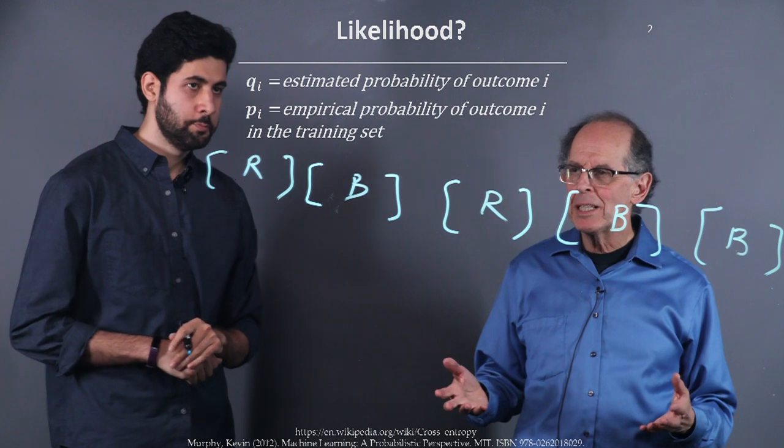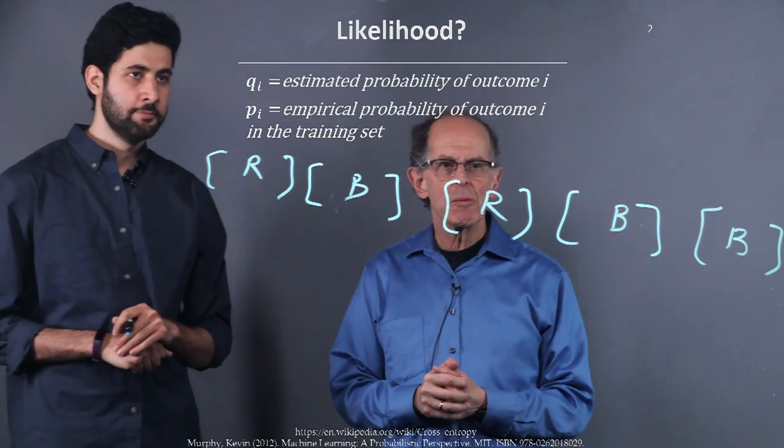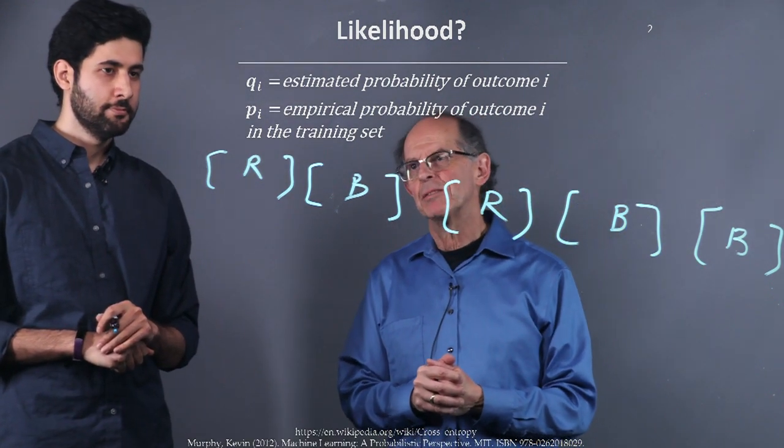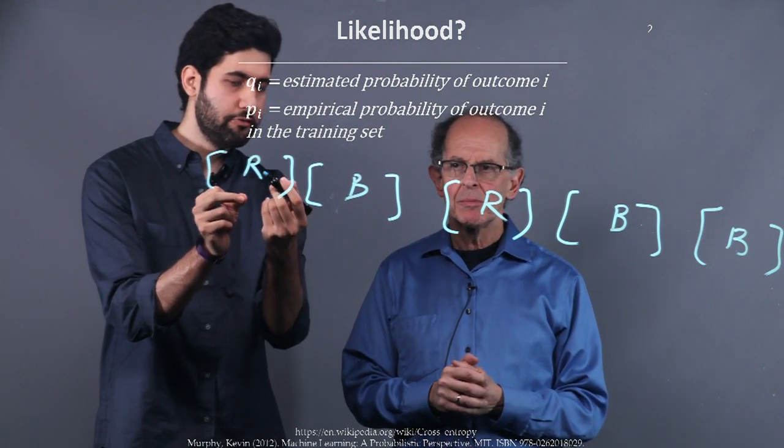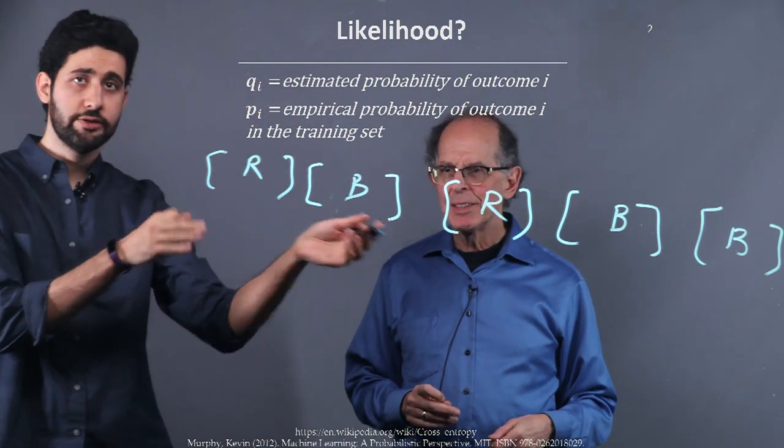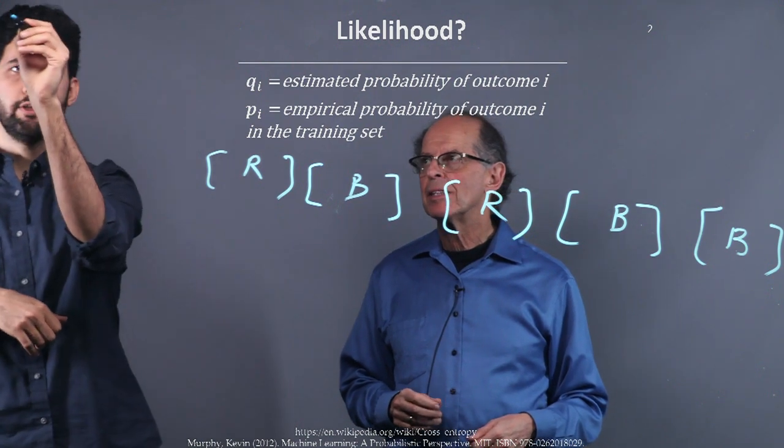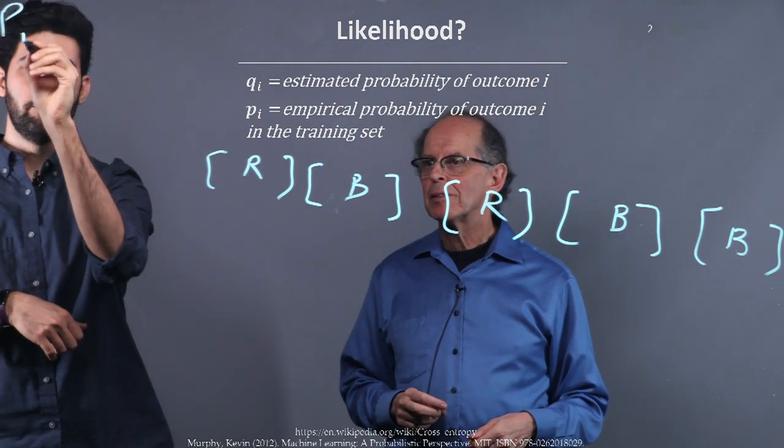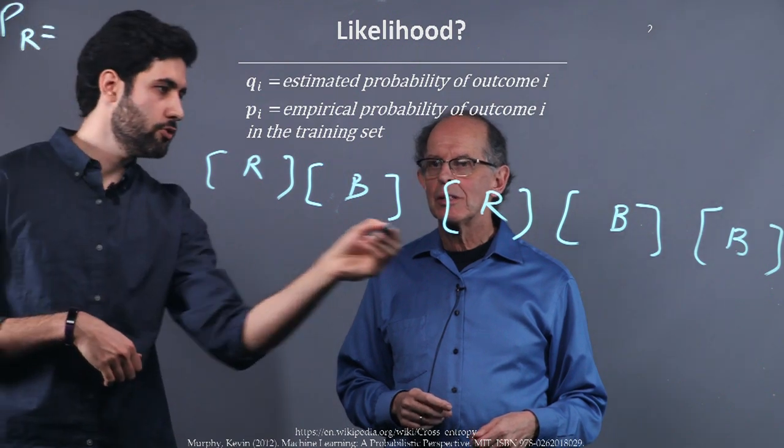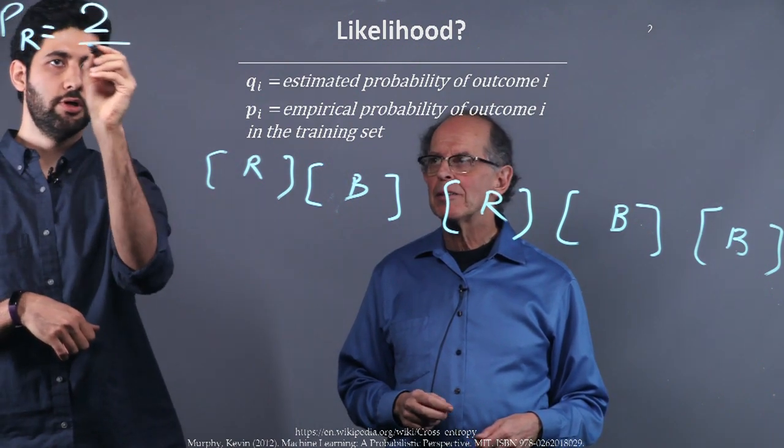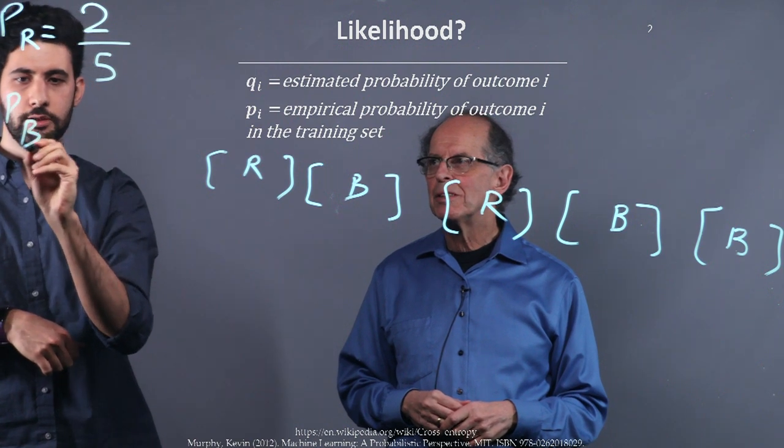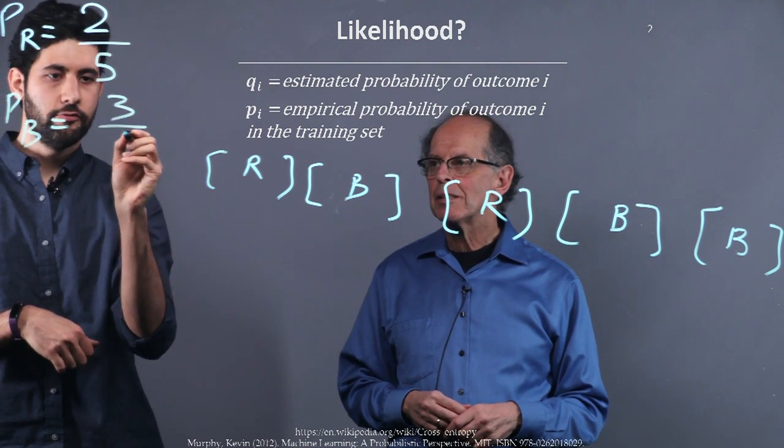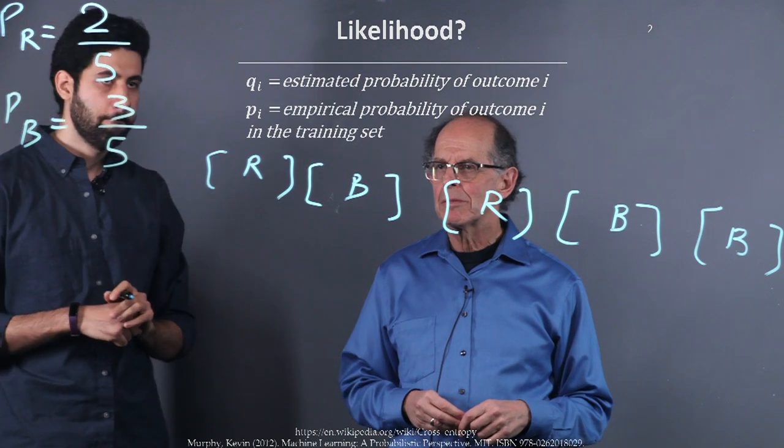So now from our training set, we can calculate probability of red. If you just count the numbers, the probability in the training set, p of red equals two out of five samples, and p of blue is three out of five samples.